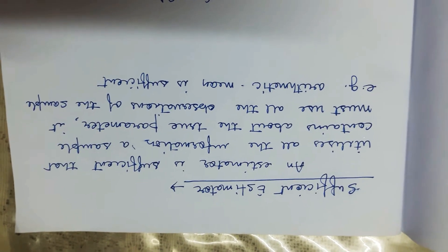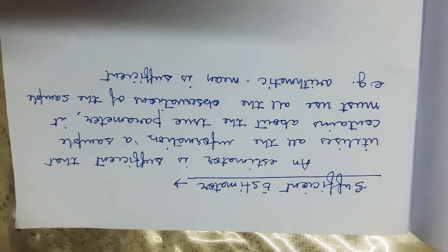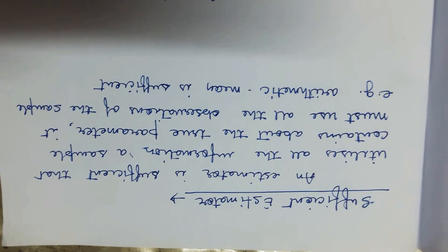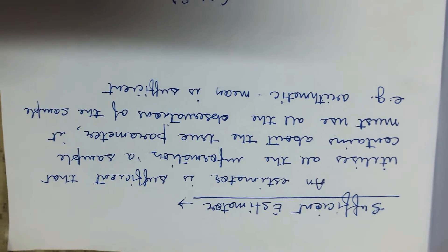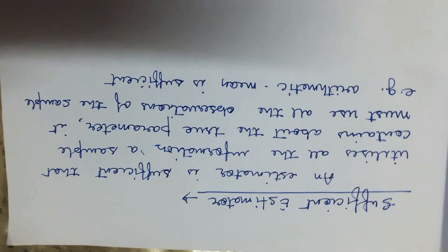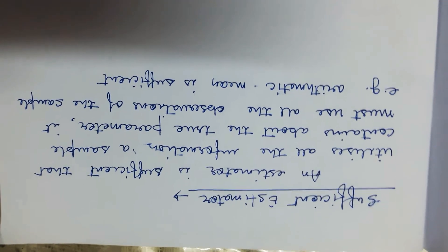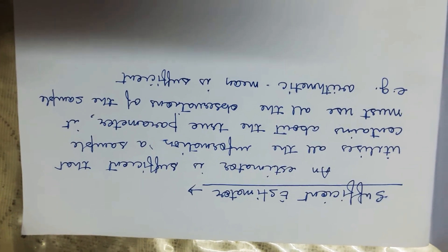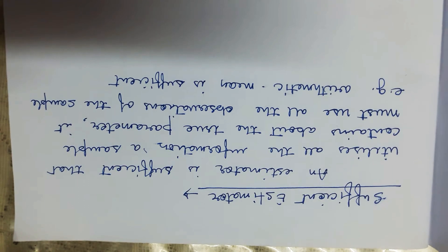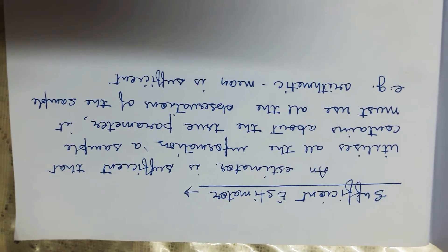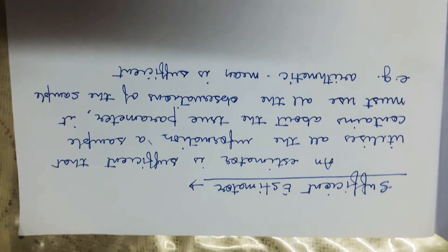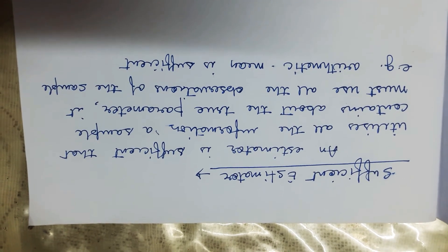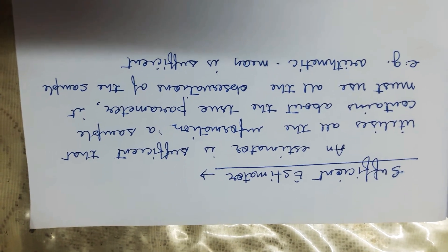The next property is the sufficient estimator. An estimator is sufficient if it utilizes all the information a sample contains about the true parameter — it must use all observations of the sample. For example, the arithmetic mean is a sufficient estimator because it considers all values of the sample. In the case of the median and mode, they do not utilize all the information of a sample; rather, they are positional averages. So the estimator calculated using the arithmetic mean is called the sufficient estimator.